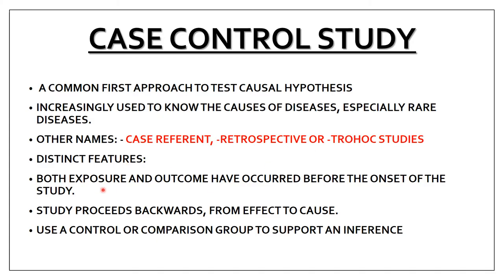The distinct features of case-control: both the exposure and the outcome have already occurred before the onset of the study — the person has already developed the disease. The study proceeds backward from effect to cause, which is why it is called retrospective. For example, if a patient has oral cancer, you look backward to find its cause. A control or comparison group is used to support inference — cases have the disease, controls do not.